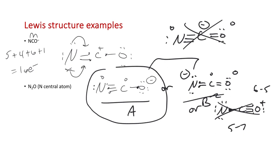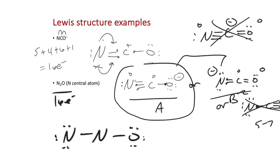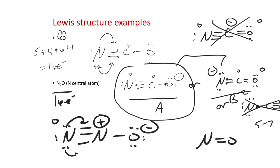For N2O — nitrous oxide — with N as the central atom, it also has 16 electrons (2 times 5 plus 6). We start with the same basic Lewis structure, make a double bond, then another double bond, ending up with zero formal charge but positive formal charge on nitrogen and negative on O. You could flip the triple bond onto O, but that's bad because it puts plus charge on O. Or go double-double, but that puts negative charge on N and neutral on O. The structure with more negative on oxygen is better.